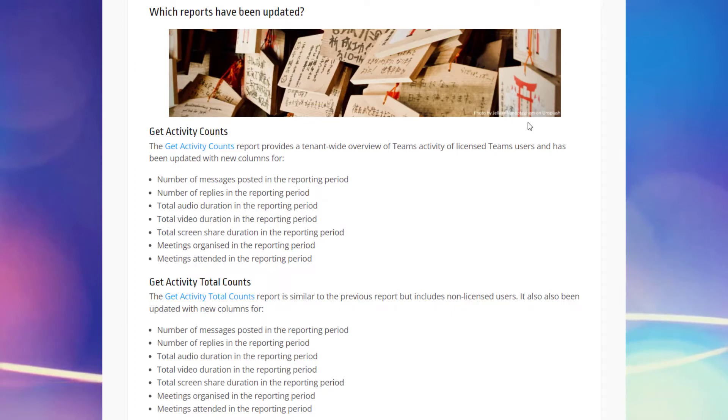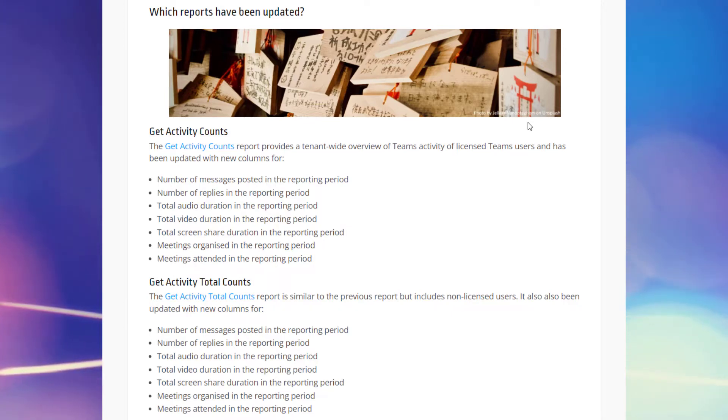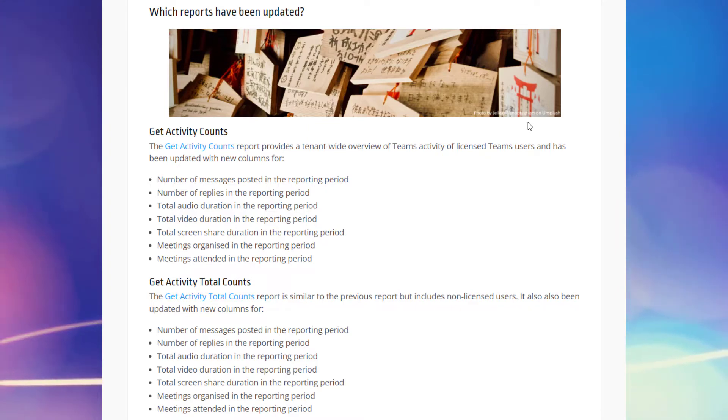The get activity counts and the get activity total counts reports have new data in them — new columns with really useful information, including things like the number of instant messages sent, the number of replies sent, audio/video screen sharing duration times, number of meetings organized, and number of meetings attended. That's very useful information to have.